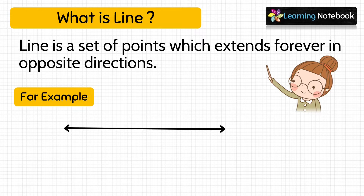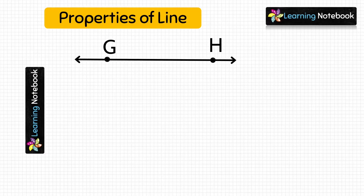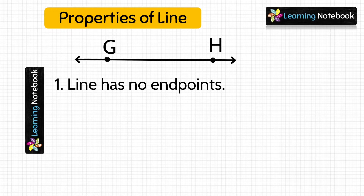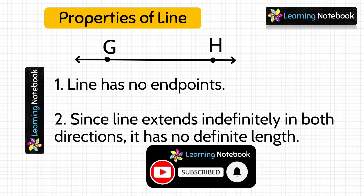Now let me tell you how to read and write a line. We need to take two points — let's take G and H. We read a line as 'line GH' or 'line HG'; both ways are fine. Similarly, we can write it as GH or HG with a small line drawn over it. Properties of a line: it has no end points, it extends indefinitely in both directions, and therefore has no definite length.